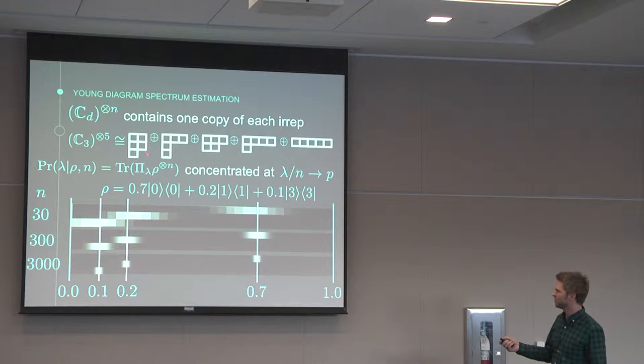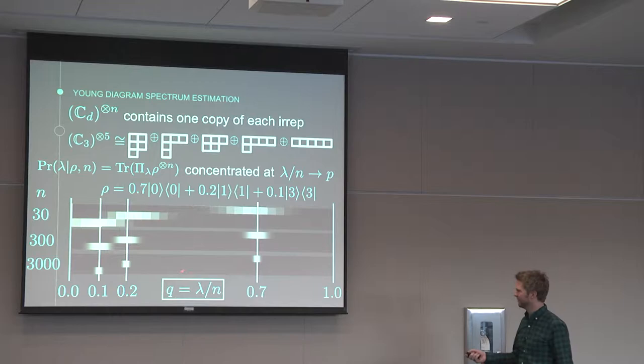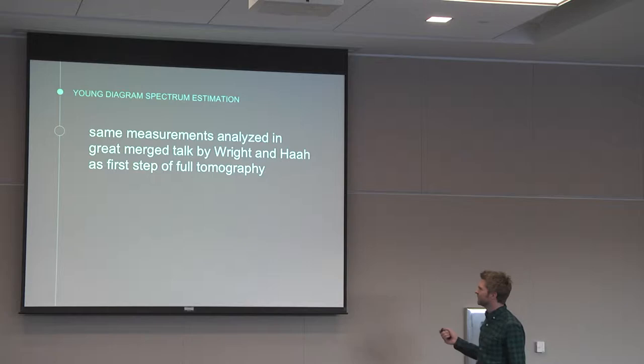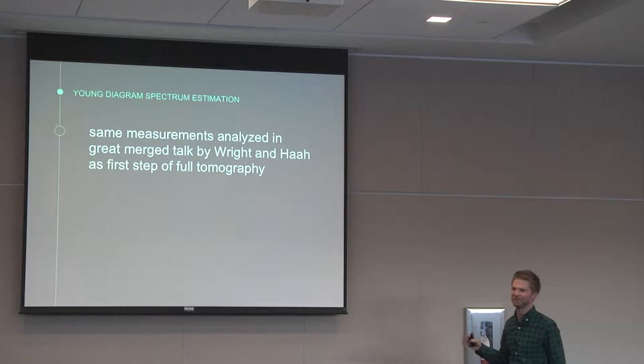Essentially what this tells us is that the Young diagram spectrum estimation algorithm should be to measure in the IREP basis, and then use whatever Young diagram we get, normalize it, and use that as our estimate of the spectrum. This is actually the same measurements that were analyzed in the great merge talk by John Wright and Zhang Wenha. They talked about full tomography as well, but they would probably call it weak Schur sampling, the first part of the algorithms they were analyzing.